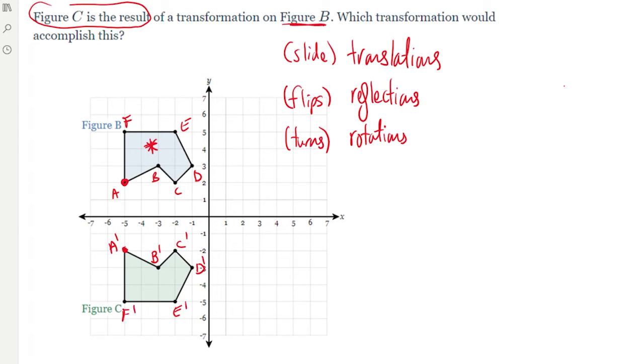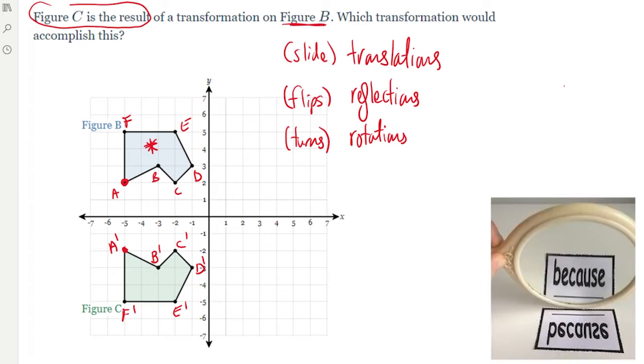So I want to show you something. This only happens with a reflection. Remember a while ago I was telling you guys, if you look into a mirror and you look at your reflection and let's say you're wearing a t-shirt and it has a word on it, when you look into the mirror, you're going to see that the word looks different, right? Not backwards necessarily, but the letters are flipped.